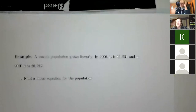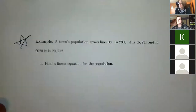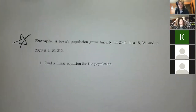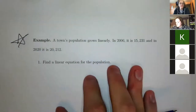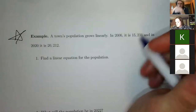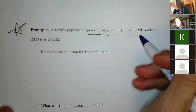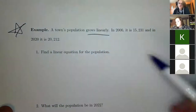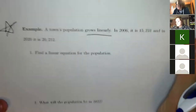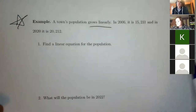Question two — the whole point is to get more exposure to algebra and functions. This one is really important. The project for this unit is about populations: modeling them linearly and exponentially. This is like a practice run for that process. The town's population grows linearly. In 2006 it is 15,231 and in 2020 it is 20,212. The first question: find a linear equation for the population.